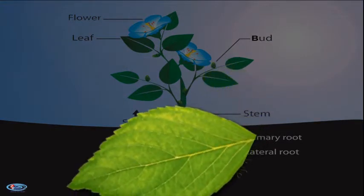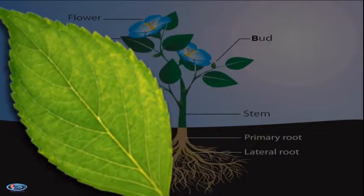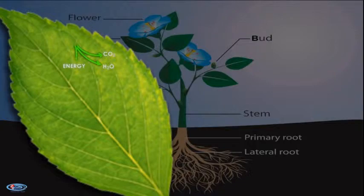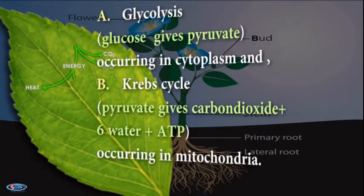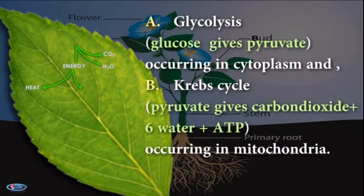One, the breakdown of glucose to carbon dioxide and water does not occur in a single step, but in a series of chemical steps. These steps occur in two major phases: first, glycolysis - glucose gives pyruvate occurring inside cytoplasm; second, Krebs cycle - pyruvate gives carbon dioxide plus water plus ATP occurring in the mitochondria.